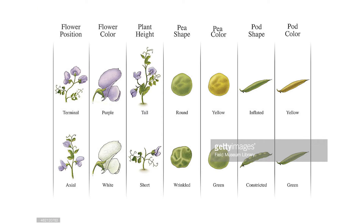Gregor Mendel's experiments with peas led to our basic understanding of plant genetics. Mendel worked with seven characteristics of pea plants: plant height, pod shape, pod color, seed shape, seed color, and flower position and flower color.